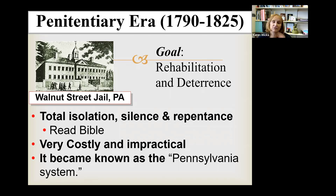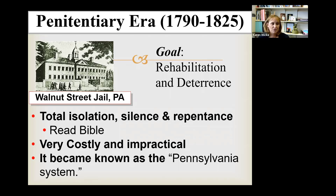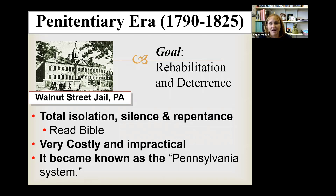It was also somewhat impractical — very hard to keep people silent and repenting the whole time. In order to enforce that silence, they often used a lot of physical violence. This first penitentiary era became known as the Pennsylvania system, and the very first one created was the Walnut Street Jail. This era lasted between 1790 and 1825.